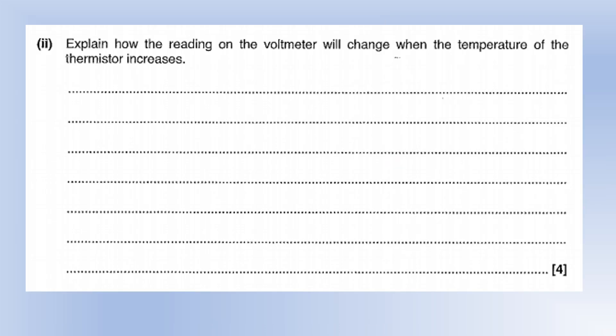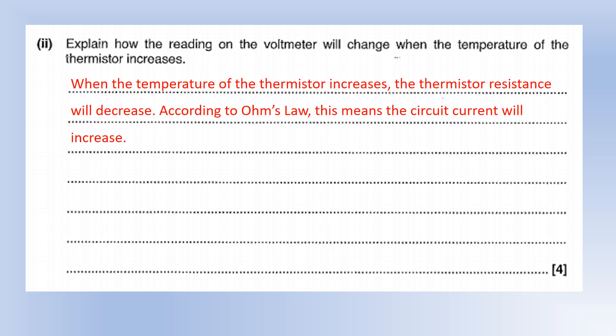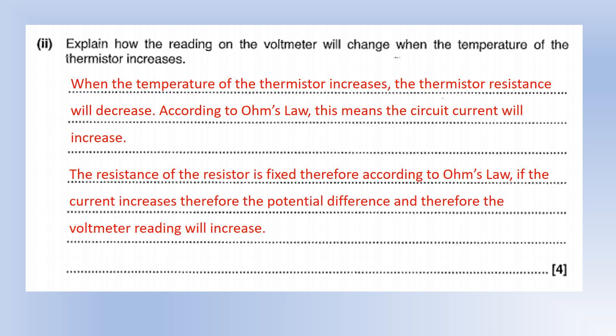When thermistor temperature increases, thermistor resistance decreases, so circuit current increases (same EMF). For the fixed resistor, by Ohm's law, higher current with constant resistance means the voltmeter reading increases.